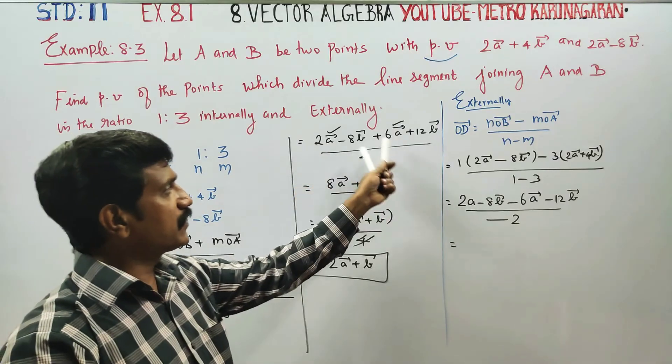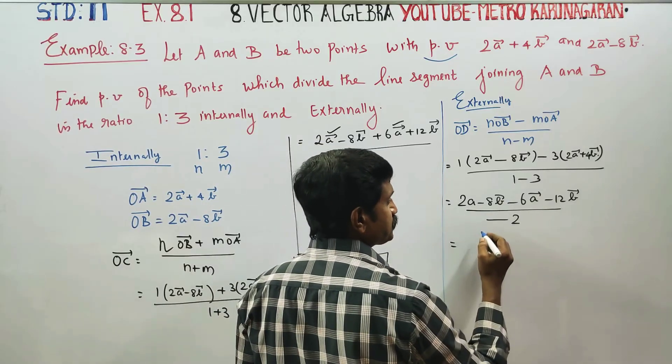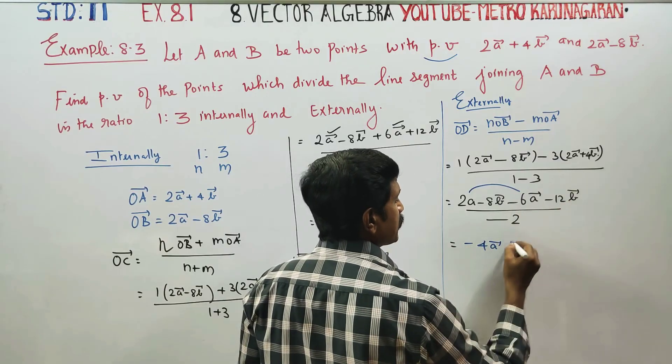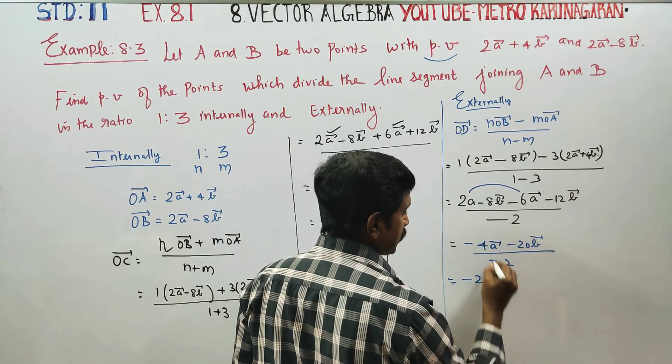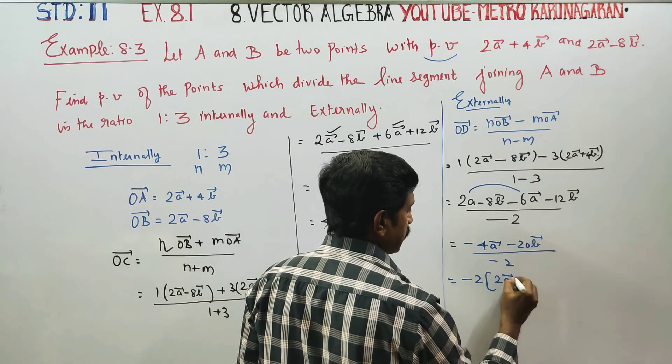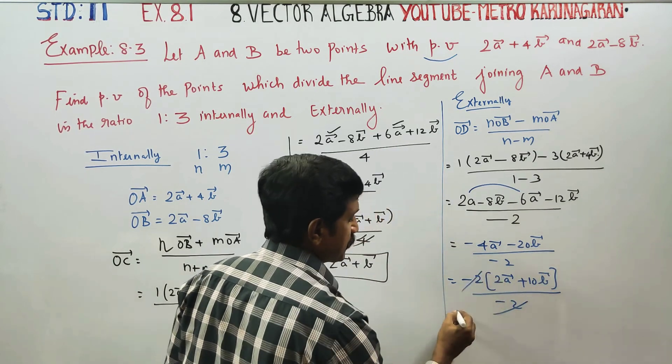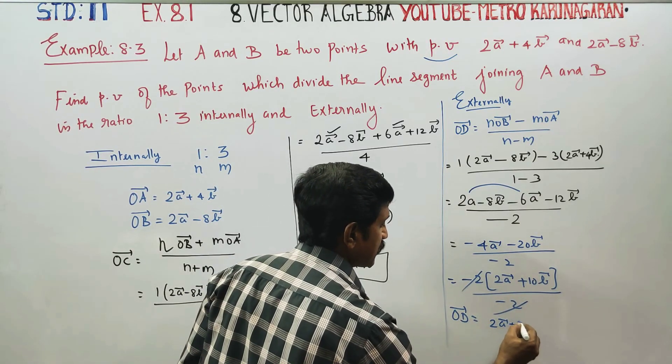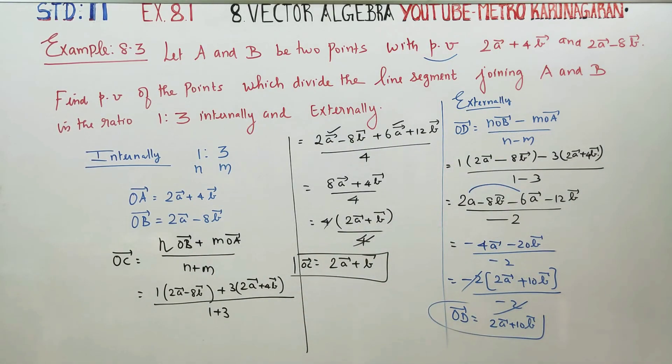This is equal to 2a minus 6a is minus 4a, minus 8b minus 12b is minus 20b, divided by minus 2. That is equal to 2a vector plus 10b vector divided by 1. Answer is 2a plus 10b vector.